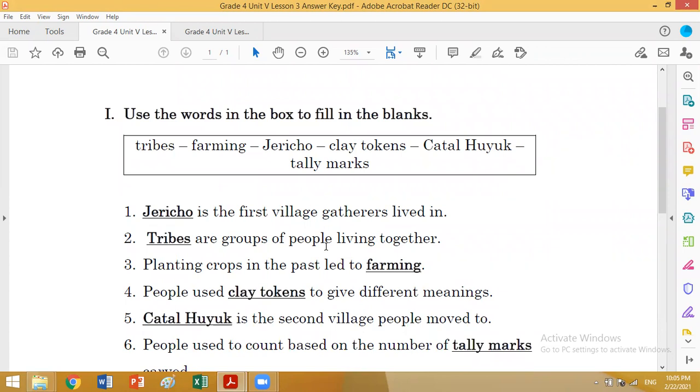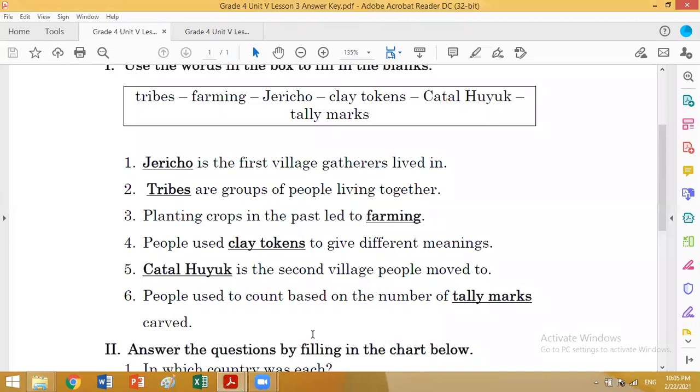Jericho is the first village gatherers lived in. Number two: Tribes are a group of people living together. Number three: Planting crops in the past led to farming.